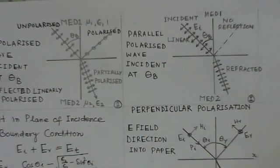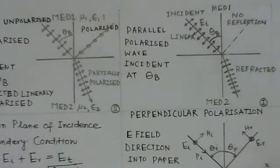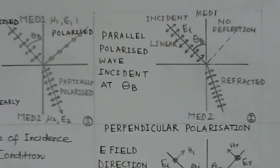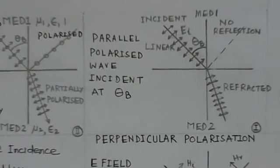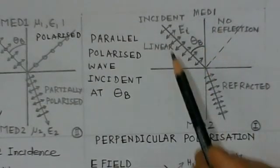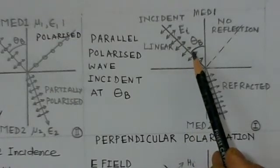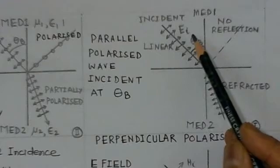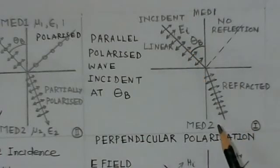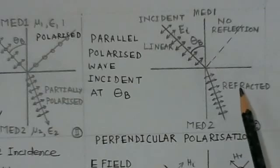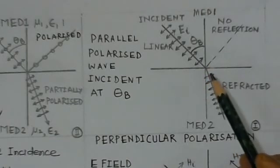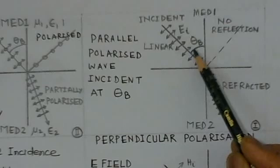We can see, in this figure, this is medium 1 and this is medium 2. This is an incident wave which is linearly polarized — the electric vector is in the direction of the plane of incidence. There is no reflection for this case since the angle of incidence here is the Brewster angle θ_v. A parallel polarized wave incident at θ_v does not have any reflection.